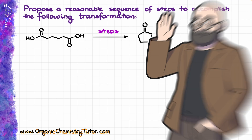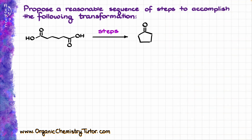Hey everyone, Victor here. In this video I want to talk about this synthesis where we are going to start with hexanedioic acid, also called adipic acid if you like common names, and as a result of several steps we are going to be making cyclopentanone. If you want to work through this synthesis first, make sure you pause the video because I'm going to start with my preliminary analysis right now.